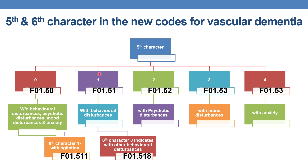Fifth character 1 indicates with behavioral disturbances. This is the only case where a sixth character is applicable in dementia codes. It is categorized into two types: sixth character 1 indicates with agitation, whereas sixth character 8 indicates with other behavioral disturbances. This applies to any type of dementia with any severity.